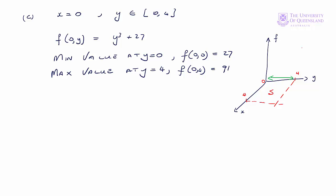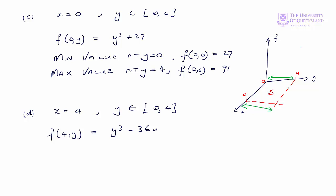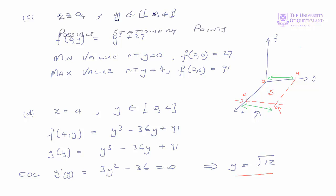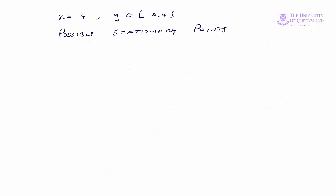The last side is when x equals 4. The function along this edge is y³ minus 36y plus 91. Just as in the y equals 4 case, we look for stationary points using first order conditions, and this implies y equals √12. So along this side we have three points to evaluate: (4,0), (4,4), and (4, √12).